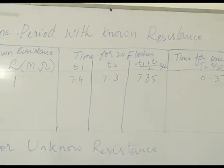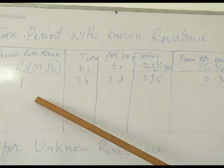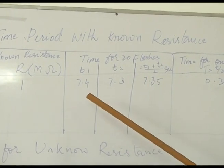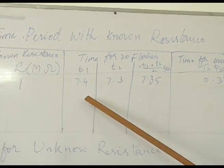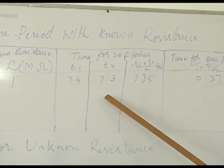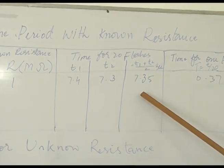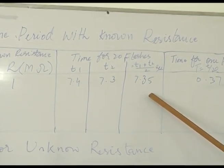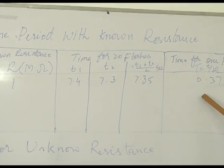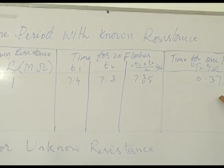What we have observed, we will put in the table. Resistance: one mega ohm. Time for 20 flashes: first reading 7.4 seconds, second reading 7.3 seconds. The average is 7.35 seconds. Time for one flash is equal to 0.37 seconds.